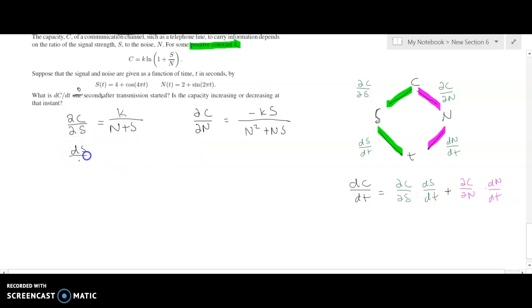To get ds/dt, I am going to, again, we could do this in Wolfram Alpha. We would just have to type in d/dt of 4 plus cosine parenthesis 4 pi t. And when we do that, we come up with negative 4 pi sine of 4 pi t. To get dc/dt similarly, we would come up with 2 pi cosine of 2 pi t.